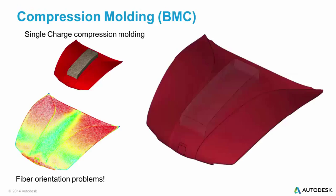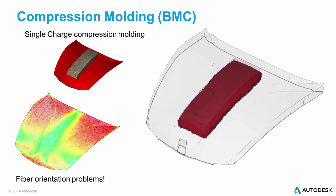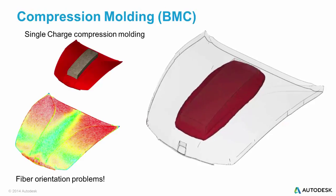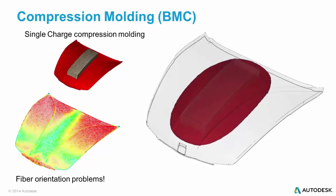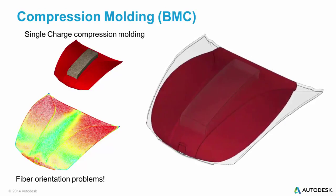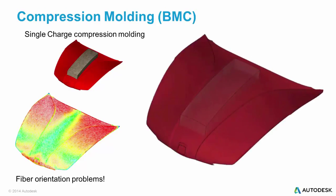Now let's look at a compression molding example. With compression molding, charges are placed in an open mold, after which the mold is closed. With mold for inside, you can see how the part fills, and in the case of a fiber-filled material, how the fiber is oriented.